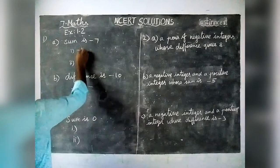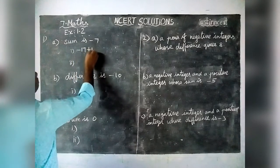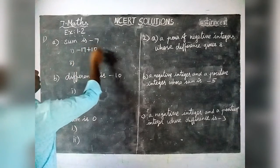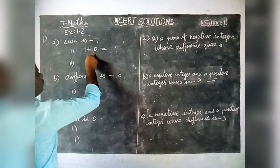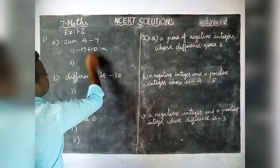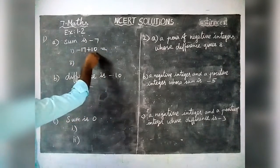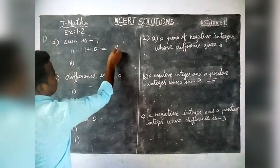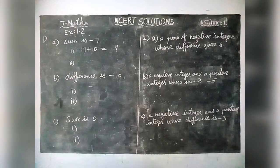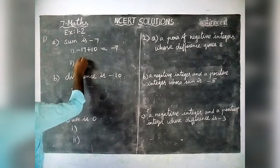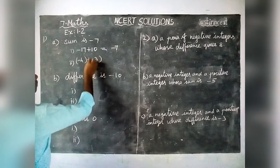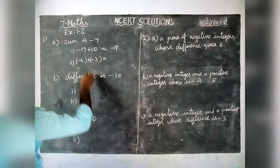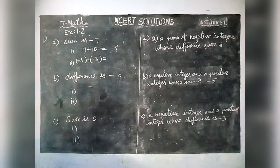We are going to take first: minus 17 plus 10. Both are integers with different signs. When we are adding these two — one negative, one positive — we have to subtract. The difference between these two is minus 7. Next, we add both negative numbers: minus 4 plus minus 3, which also gives us minus 7.